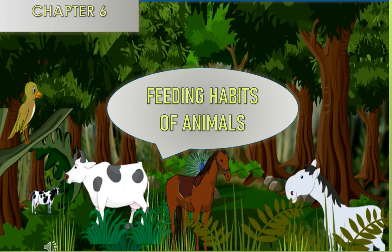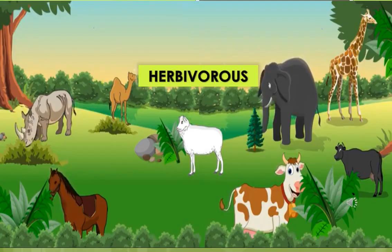You already know that different types of animals eat different kinds of food. Animals need food for their survival, growth and energy. Unlike humans, they cannot prepare food for themselves, so they have to depend on plants or other animals for food.